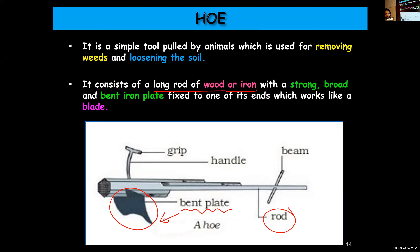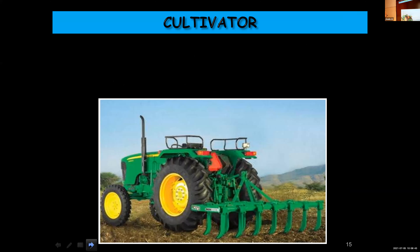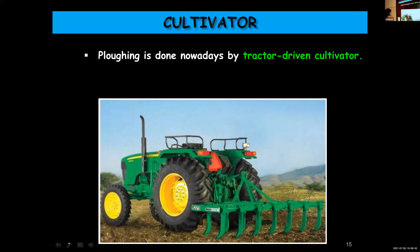Are we clear, children? Yes ma'am. Moving on to the next device — the cultivator. You can see a tractor as well as a cultivator here; the cultivator is attached to the tractor. This device is driven using a tractor. Plowing is done nowadays with the help of a tractor-driven cultivator, rather than using a hoe or a plough.